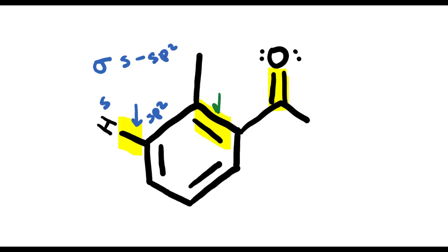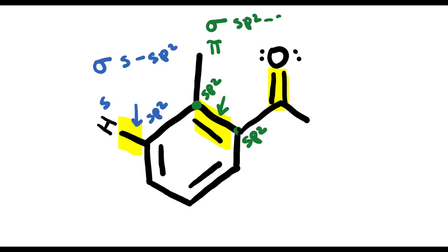Let's try another example. This bond here is a double bond, which is comprised of both a sigma bond and a pi bond. When looking at this double bond, we first determine the orbital overlap for the sigma bond. The left carbon is sp2-hybridized, and the right carbon is also sp2-hybridized. So the sigma bond is formed by sp2 to sp2 overlap. Now what about the pi bond? Pi bonds are always formed by p to p overlap, where two p orbitals overlap one another.